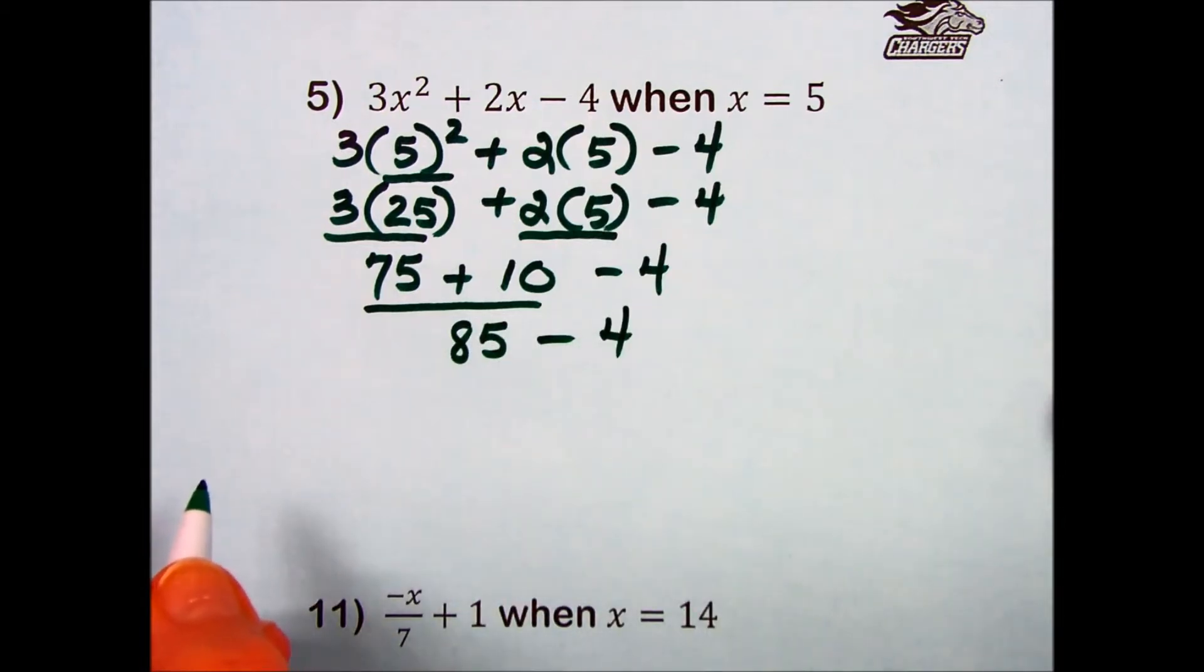Substituting 85 in place of that expression, we're left with a subtraction. 85 minus 4 is going to leave us with a result of 81 for the value of that expression.